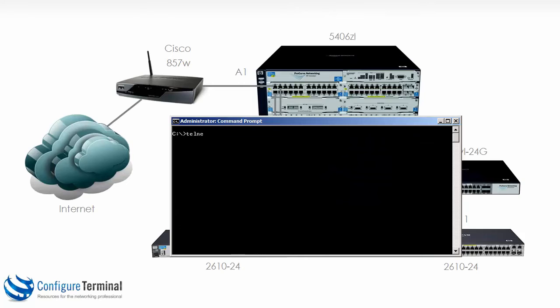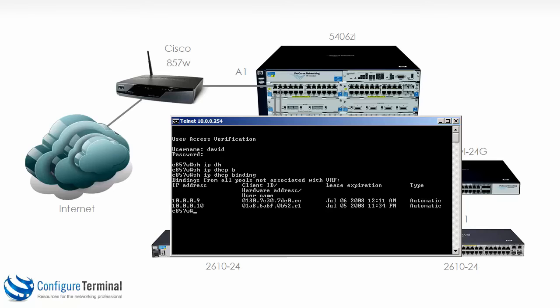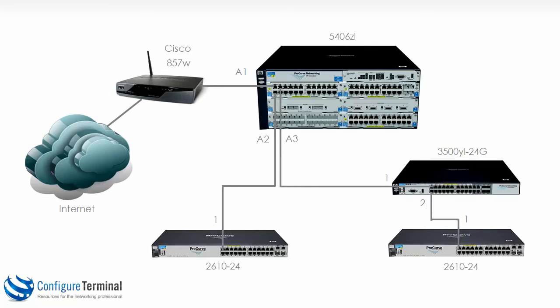Telnetting to the Cisco router and logging in, we can run 'show IP DHCP binding'. At the moment only two devices have IP addresses — addresses ending in 9 and 10. Now we'll turn on the HP switches. Remember, by default HP switches will use DHCP to try to acquire an address, so these four devices should boot up, send a DHCP request, and receive an IP address from the Cisco router. All interfaces are in VLAN 1 by default, giving us a flat network.